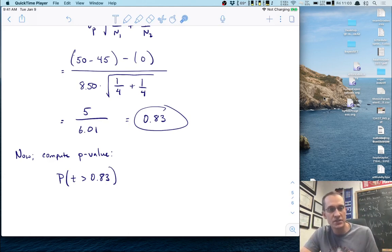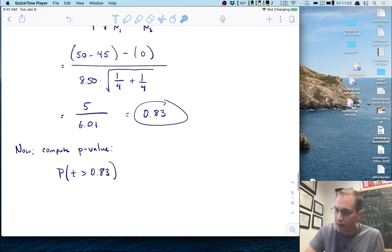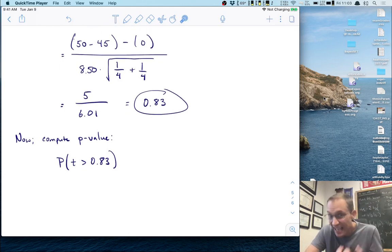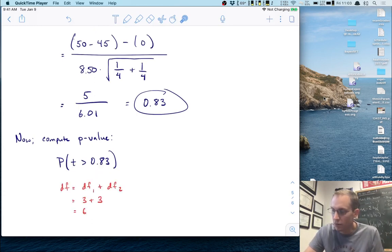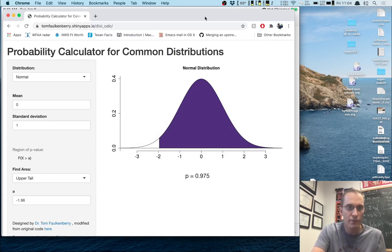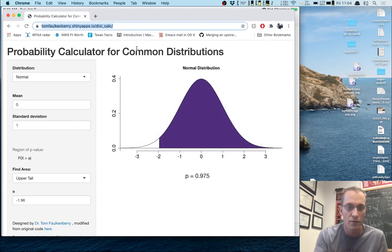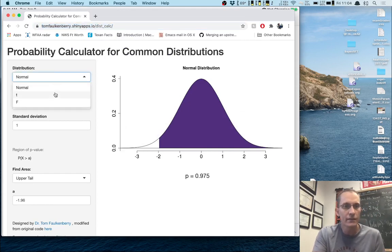The calculator requires we specify the degrees of freedom. The degrees of freedom is the sum for the two groups: df for group one plus df for group two, which is three plus three, just six. Let's go to our calculator - the link is in the notes below. We want to select the t distribution.